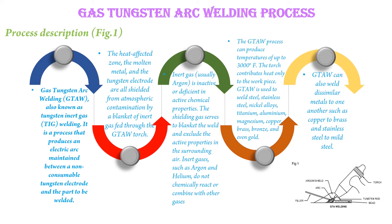The GTAW process can produce temperatures of up to 3,000 degrees Fahrenheit. The torch contributes heat only to the workpiece. GTAW is used to weld steel, stainless steel, nickel alloys, titanium, aluminum, magnesium, copper, brass, bronze, and even gold. GTAW can also weld dissimilar metals to one another, such as copper to brass and stainless steel to mild steel.